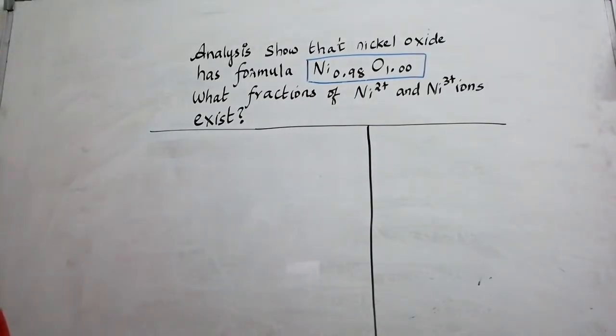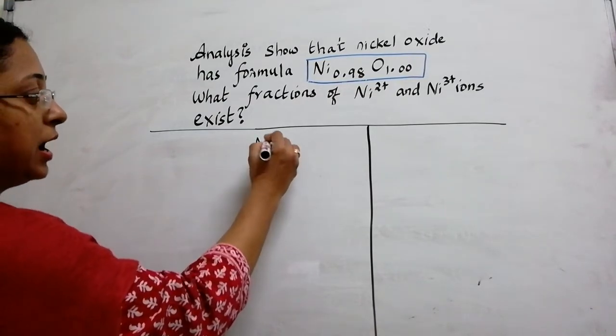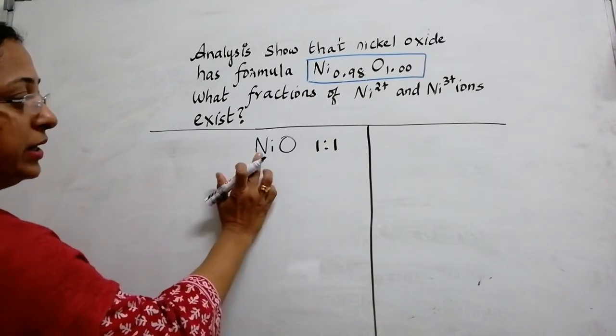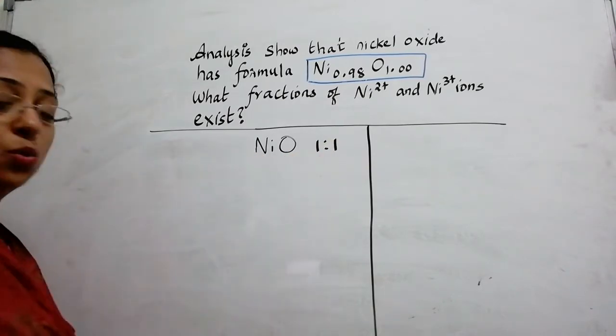Before we solve this problem, let us understand what is a defect. Normally when I tell you to write nickel oxide, we write it as NiO which has a ratio of atoms 1 to 1, nickel 1 and oxygen 1. So 1 is to 1.